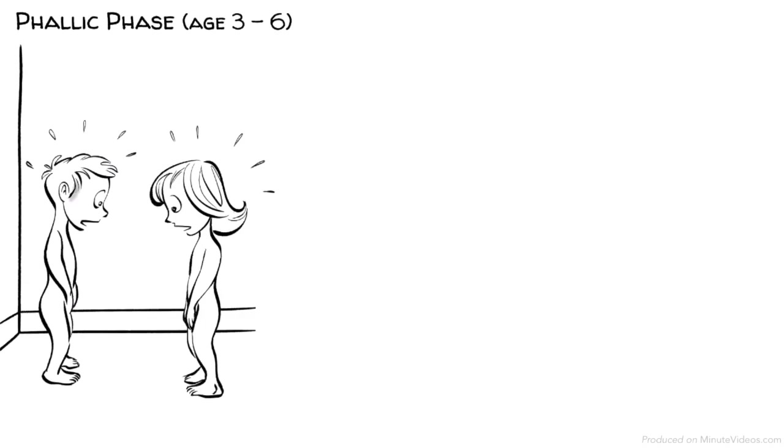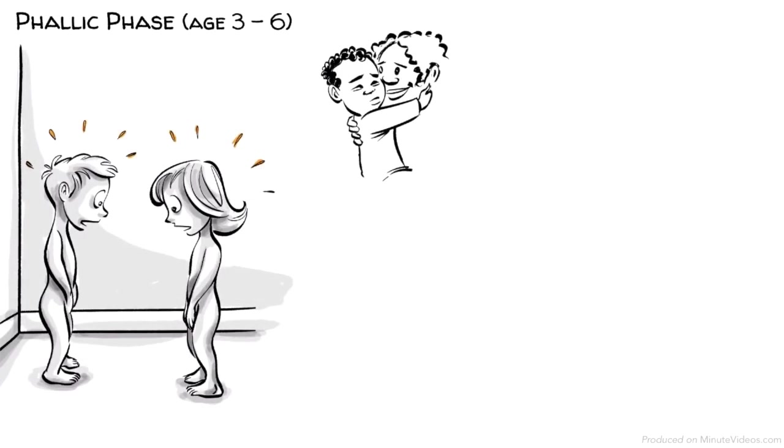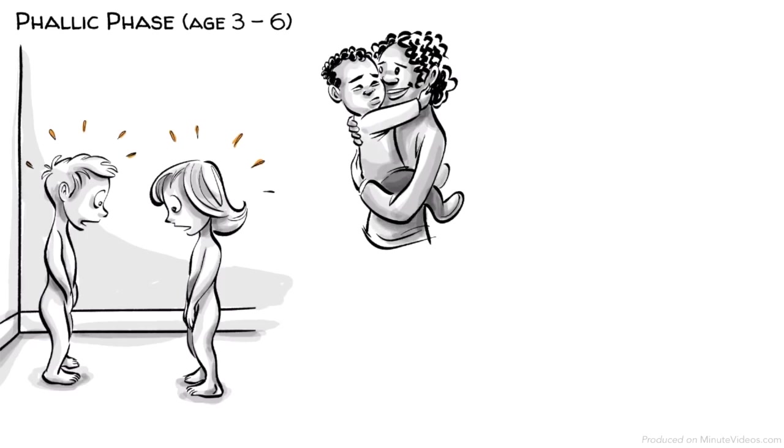The phallic phase, age three to six. Our libido now turns to the genitals as we discover the differences between the female and the male gender. The boys' conflict in this phase occurs as a rivalry with their father, also called the Oedipus complex.